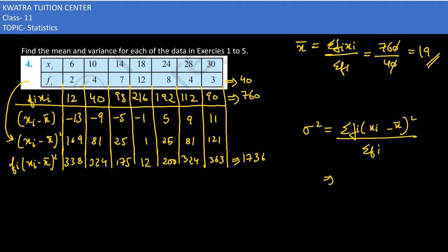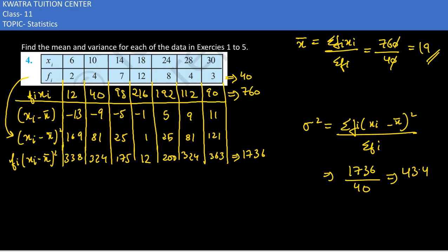So you would have 1736 divided by 40. So dividing these two numbers you would get 43.4 as the answer.